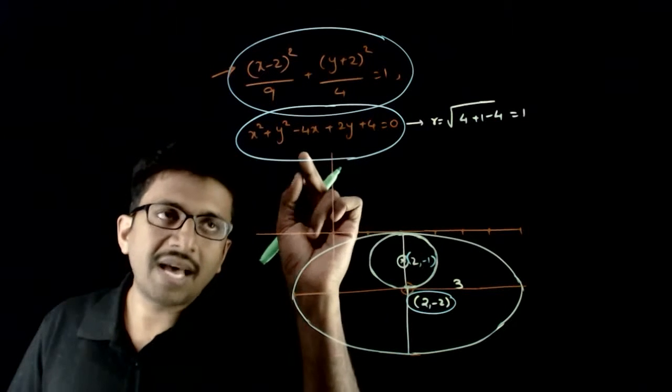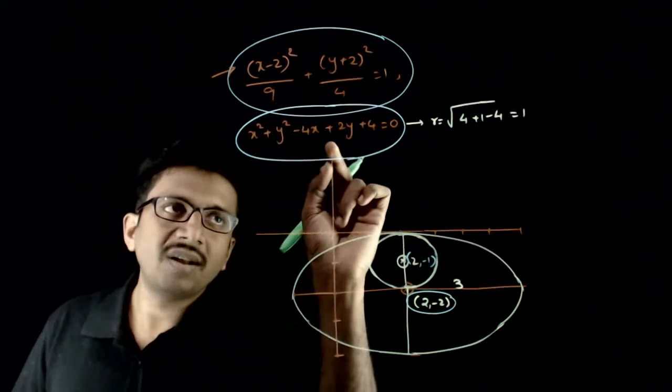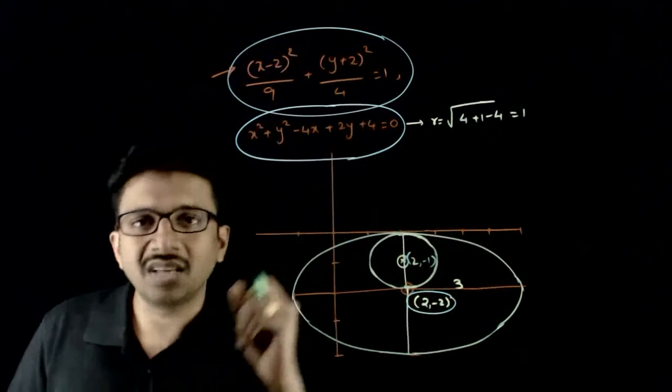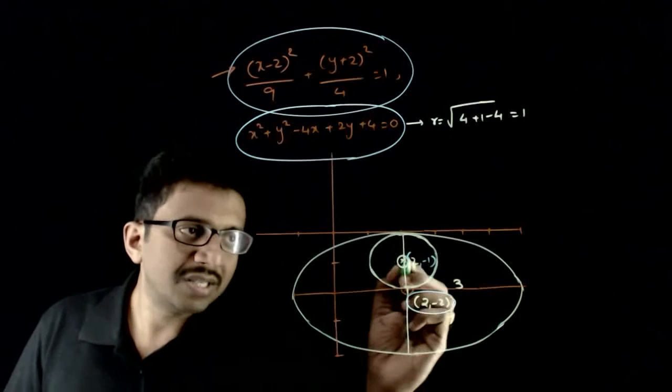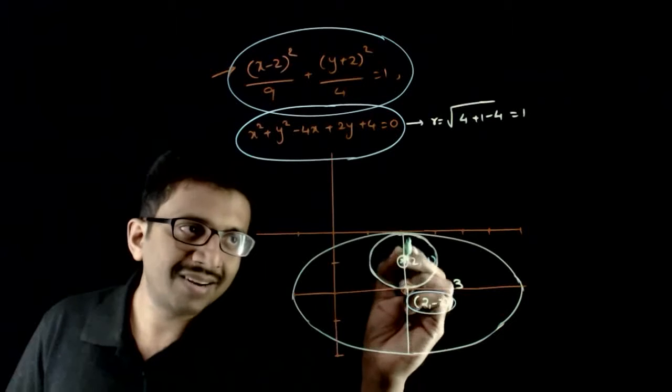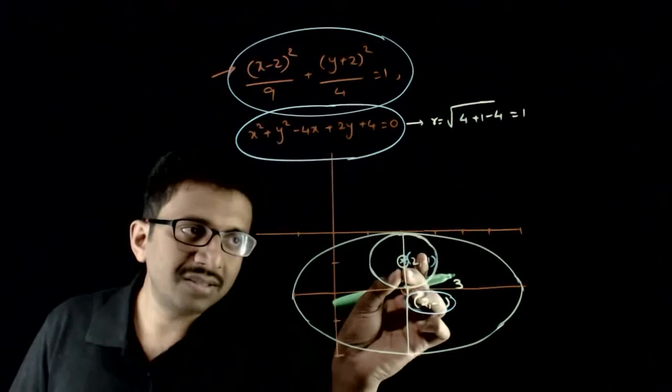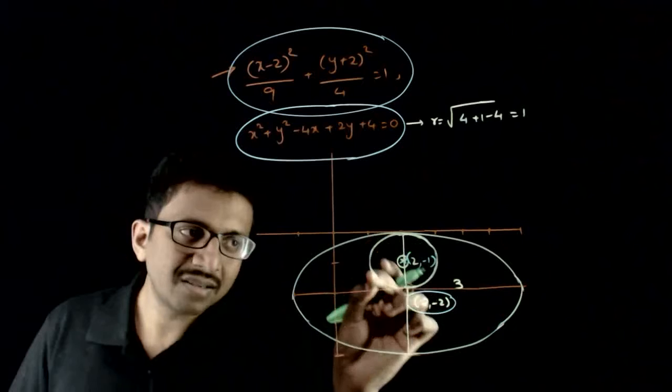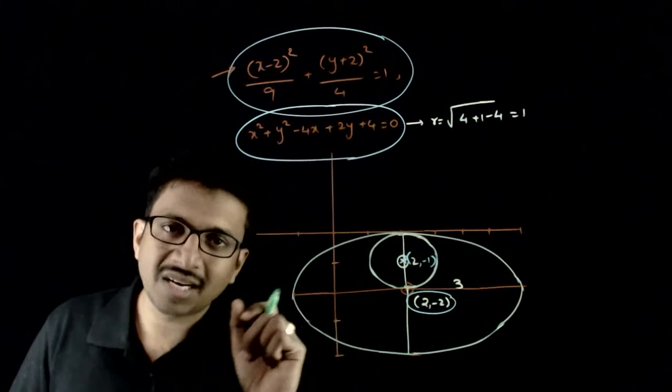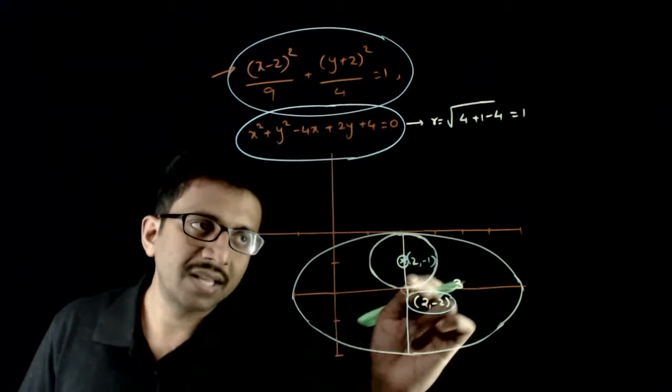The radius, if you calculate using √(g² + f² - c), equals 1. So starting from (2, -1) with radius 1, this circle also touches the y-axis and passes through the center of the ellipse. This circle looks like this.